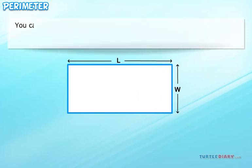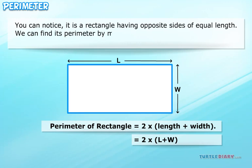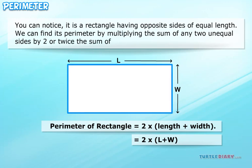You can notice it is a rectangle having opposite sides of equal length. We can find its perimeter by multiplying the sum of any two unequal sides by 2 or twice the sum of length and width of a rectangle.